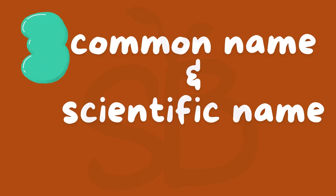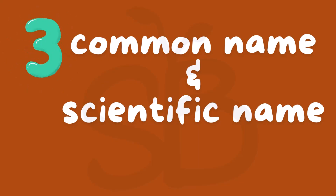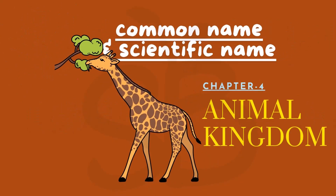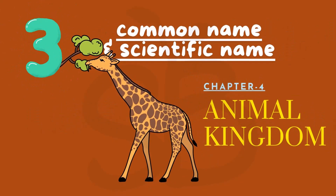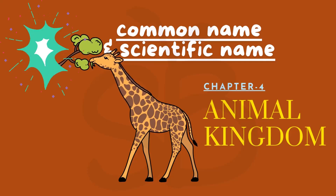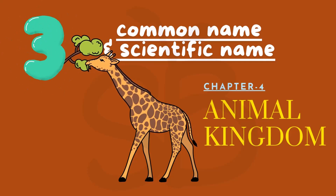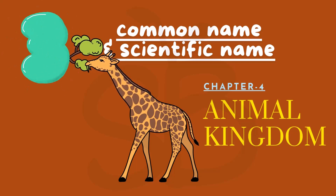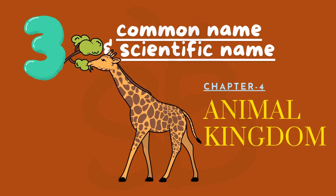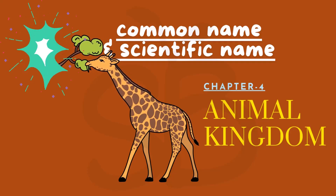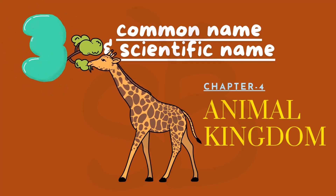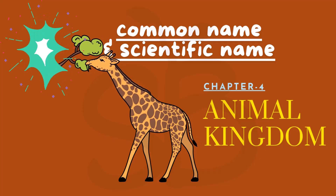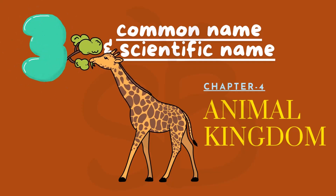Point number 3 is common names and scientific names. In Class 11, especially in the Animal Kingdom chapter, you need to study both common names and scientific names. Following and learning scientific names is very important, as is knowing the common names. This is especially relevant for the Animal Kingdom chapter.